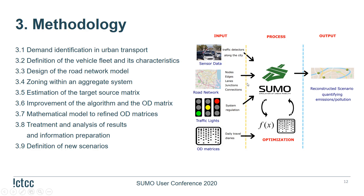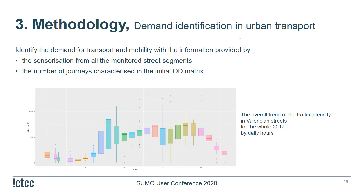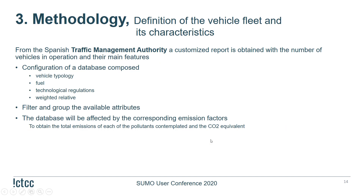These are the steps that are part of the methodology. All the inputs described before are processed with SUMO and the mathematical model to reconstruct the scenario, quantify emissions and pollution. First, we identify the demand for transport and mobility using information from the road monitoring segments and the number of journeys characterized in the origin-destination matrix. We analyze the average road traffic during different hours of the day, which is later used as multiplicity factors of Lagrange.